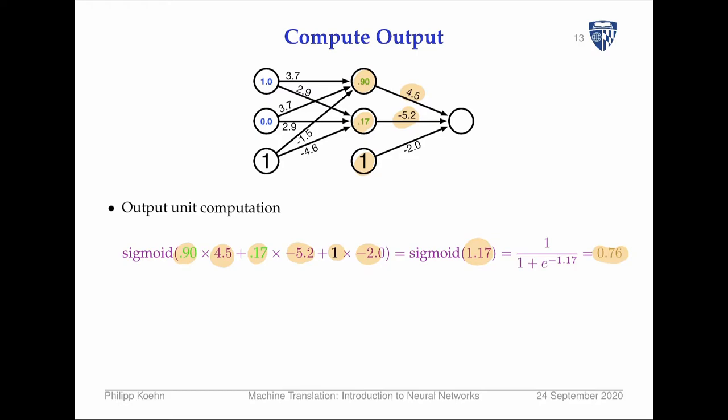Now we compute the final output node. We take 0.90 × 4.5, plus 0.17 × (-5.2), plus the bias term × (-2). That gives 1.17, and passing through sigmoid gives 0.76. So the processing is simply: multiply inputs by weights, take the sum, pass to sigmoid — that's all there is.